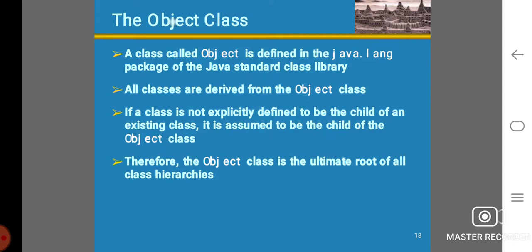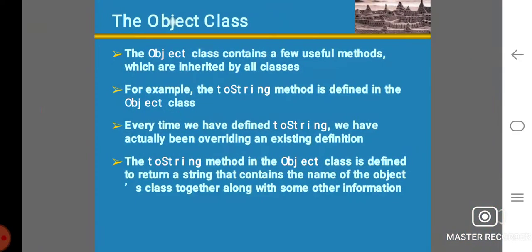The Object Class: A class called Object is defined in the java.lang package of the Java standard class library. All classes are derived from the Object class. If a class is not explicitly defined to be the child of an existing class, it is assumed to be the child of the Object class. Therefore, the Object class is the ultimate root of all class hierarchies.